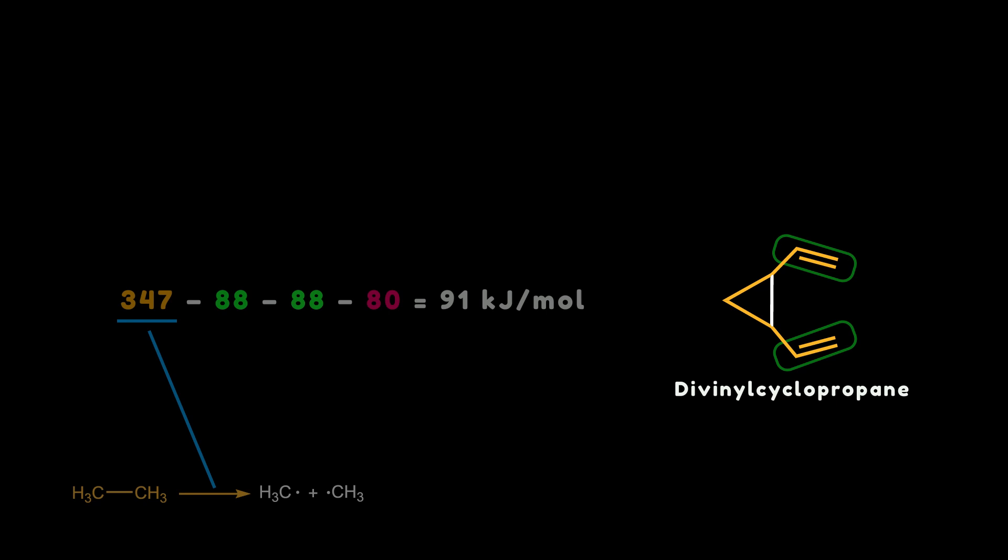In this case, we have two allylic systems, each of which decreases the energy by 88 kJ per mole. Cyclopropene also decreases the energy by 80 kJ per mole. As a result, the energy required for breaking the carbon-carbon bond is 91 kJ per mole.